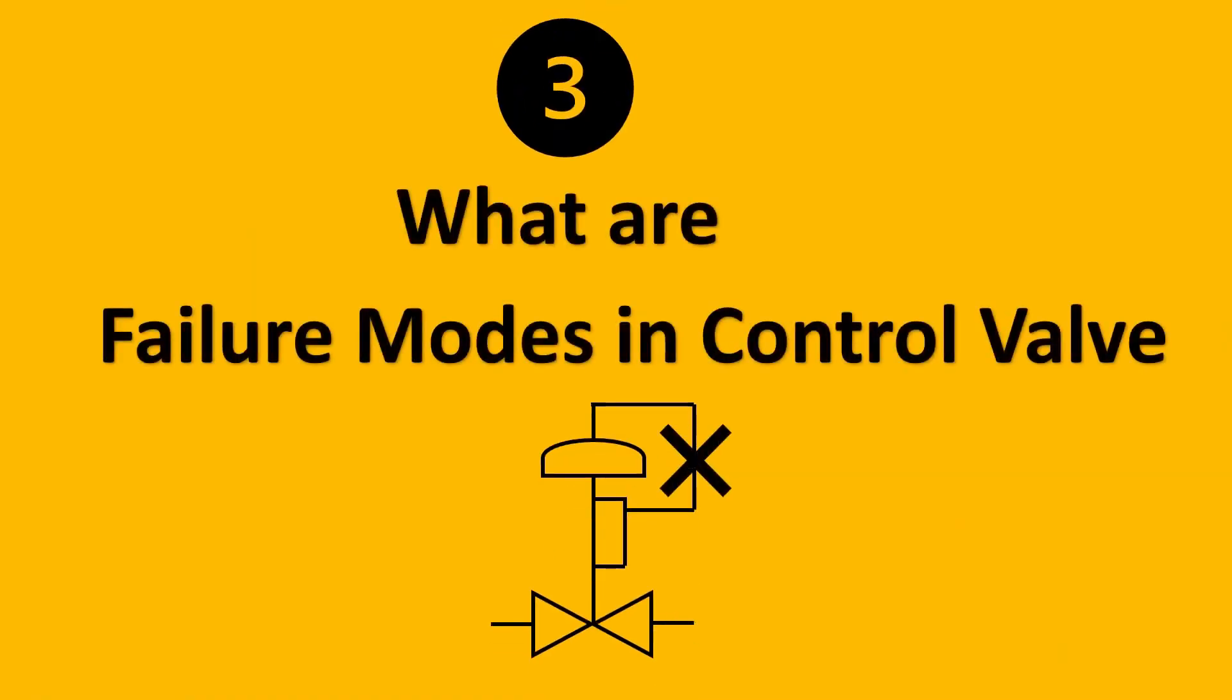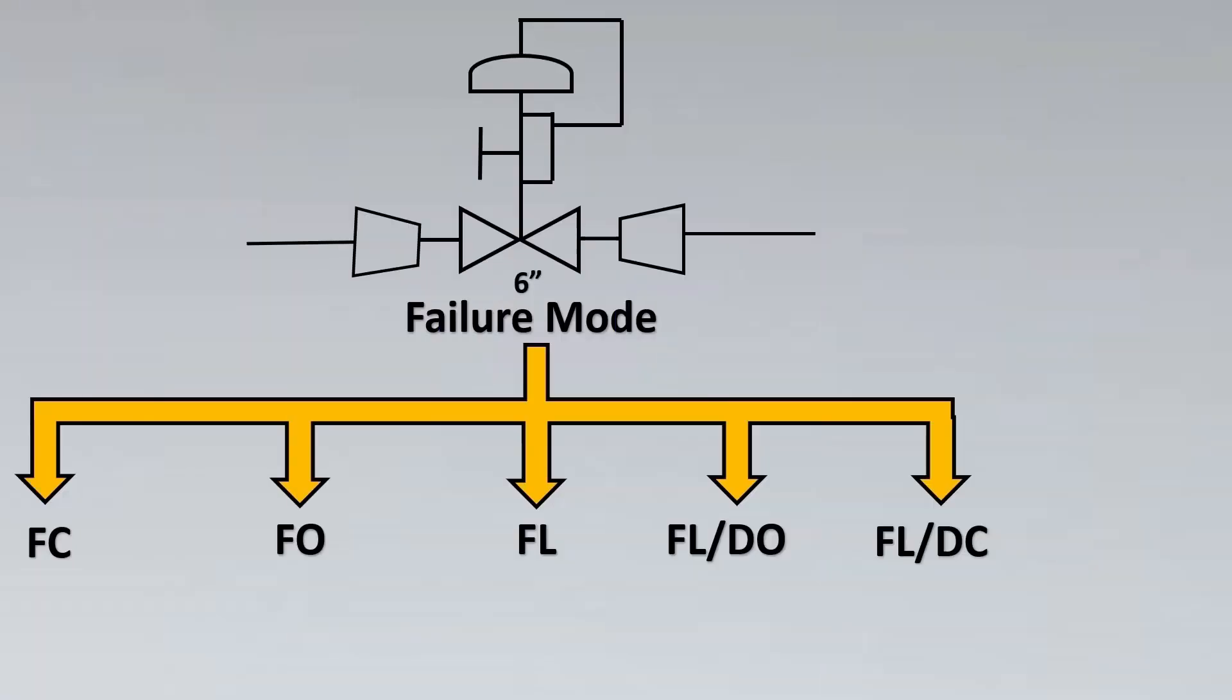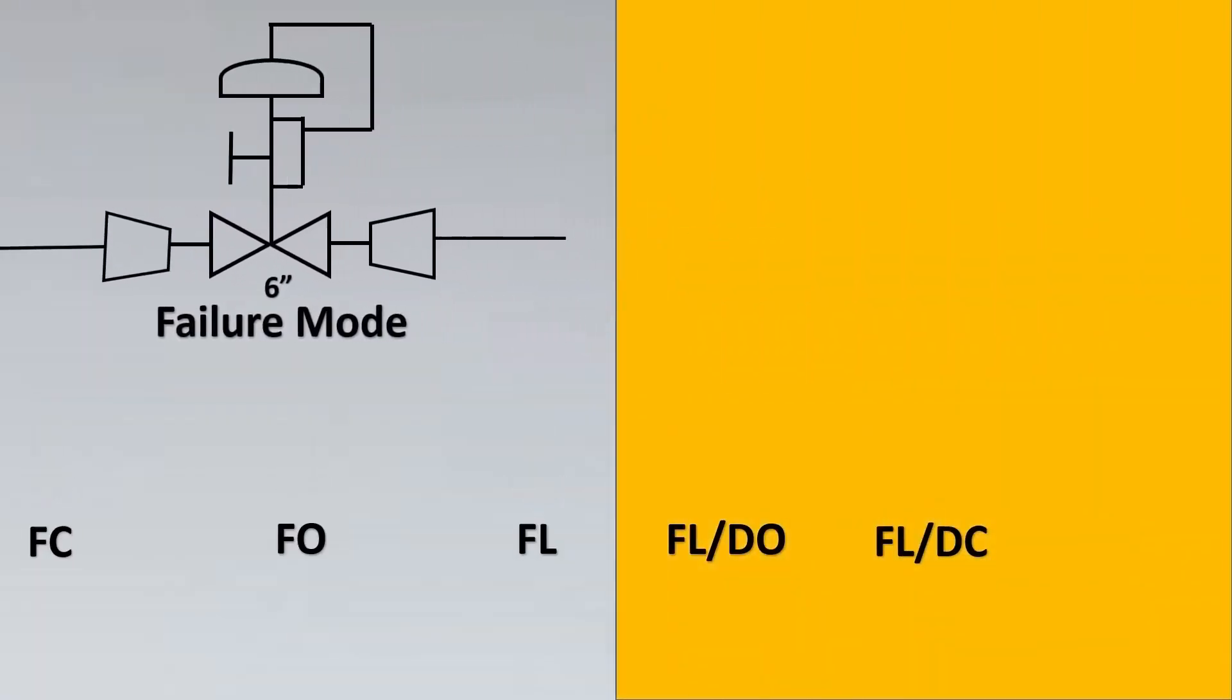Now what happens here is the actuator has to put very little force in order to move the plug assembly. The third most asked interview question is what are the failure modes in control valve.